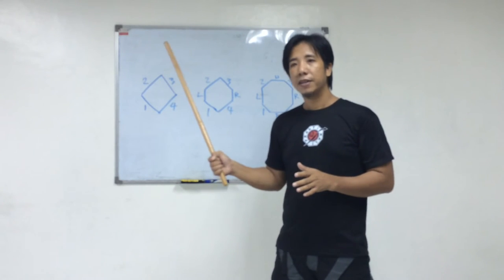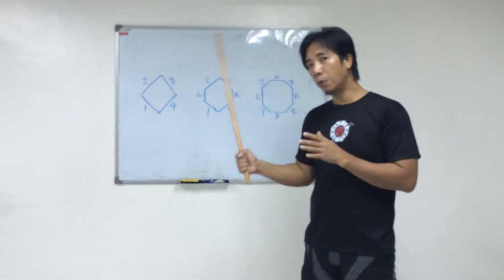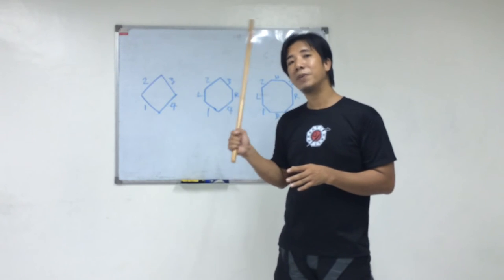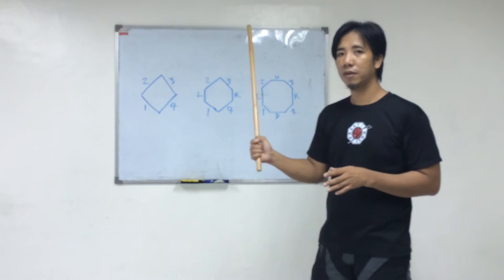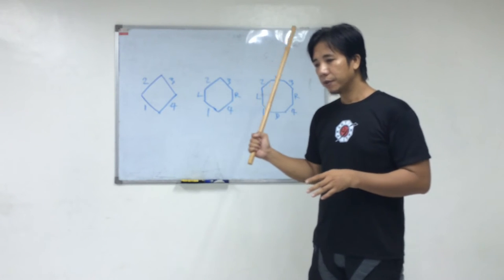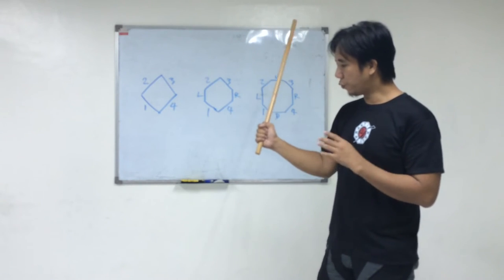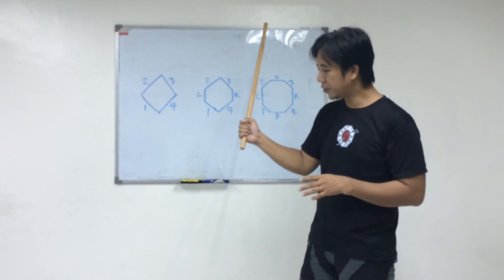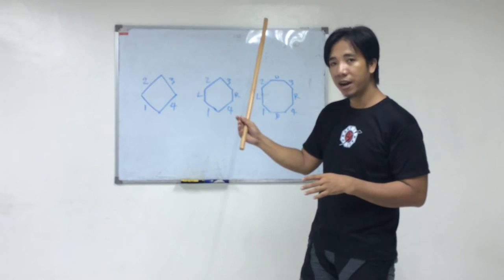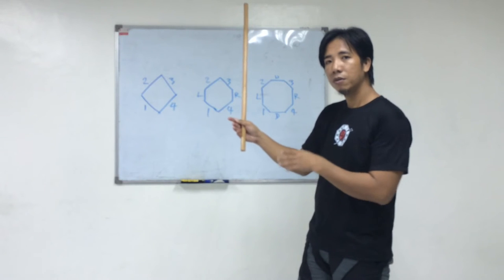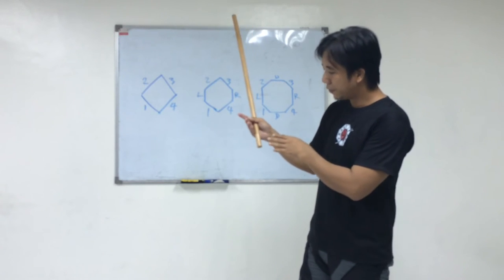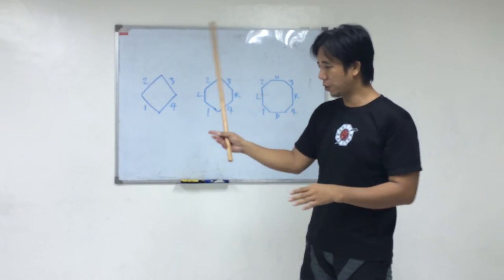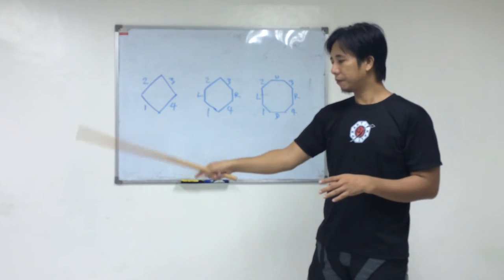When the stick is hit by an opponent, it will not be easily disarmed. Normally when you do a twirling motion, you have a tendency to open your hand to allow space for the stick to twirl.